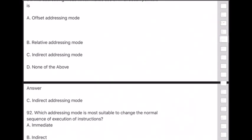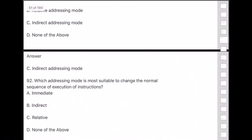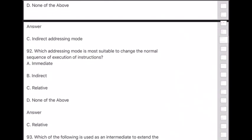Question 92: Which addressing mode is most suitable to change the normal sequence of execution of instructions? Answer is option C — relative addressing mode.